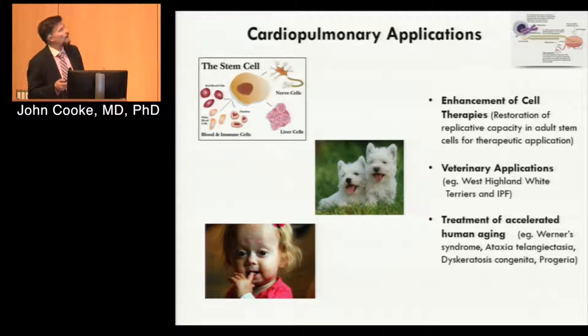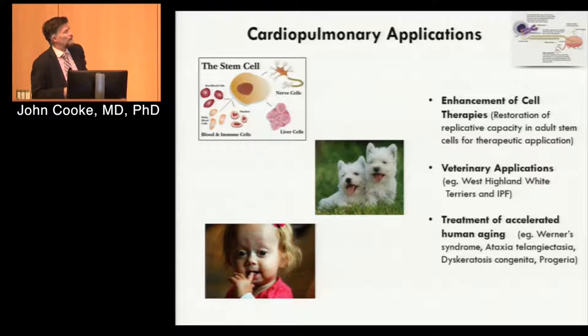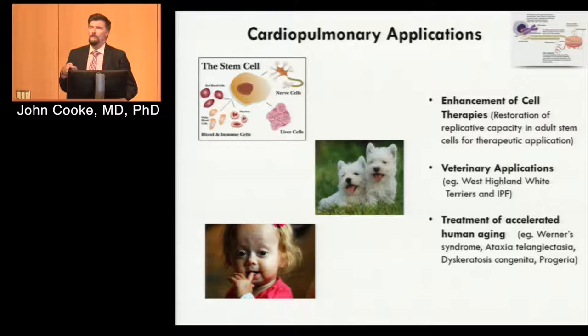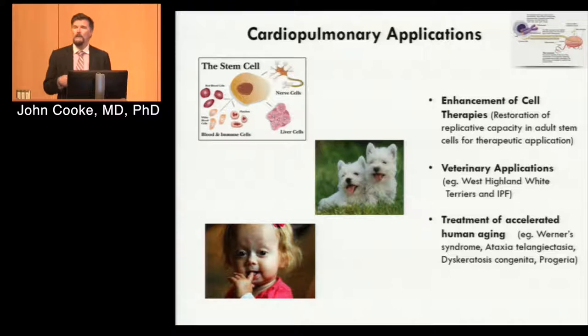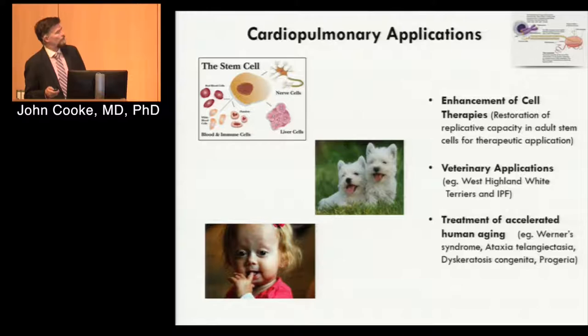The low-hanging fruit for us with this telomerase approach is cell therapy ex vivo — modification of cells ex vivo to improve cell therapies. Any cell therapy could potentially be improved by telomerase, by improving the ability of somatic cells to replicate. With respect to the topic today, we focused on children with progeria because these children have accelerated aging and die from atherosclerotic vascular disease.